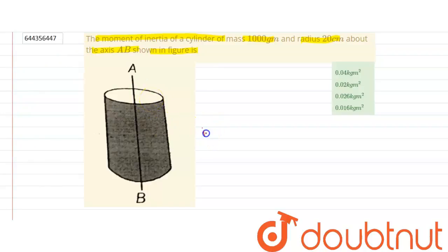Now first, we'll suppose the cylinder is hollow. For a hollow cylinder, the moment of inertia is MR². M is 1 kg, R is 0.2 m, so it will be 0.04 kg·m². The first option is correct.